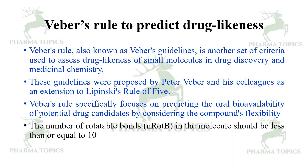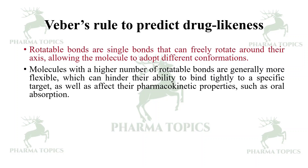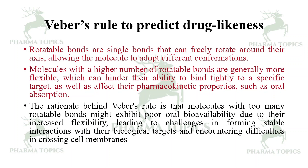Rotatable bonds are single bonds that can freely rotate around their axis, allowing the molecule to adopt different conformations. Molecules with a higher number of rotatable bonds are generally more flexible, which can hinder their ability to bind tightly to a specific target. The rationale is that molecules with too many rotatable bonds may exhibit poor oral bioavailability, due to challenges in forming stable interactions with biological targets and difficulties crossing cell membranes.